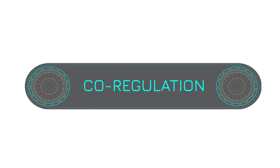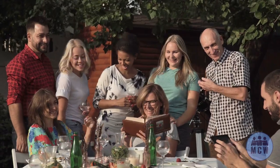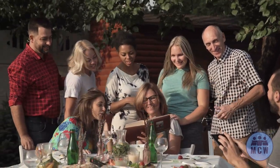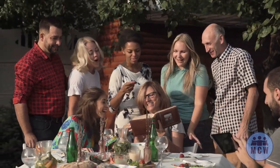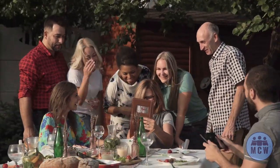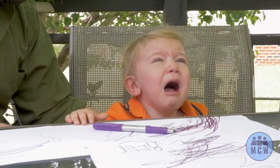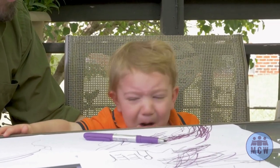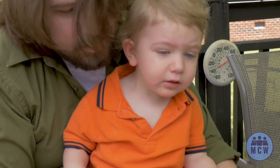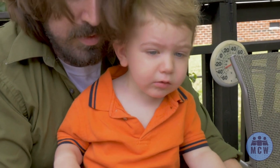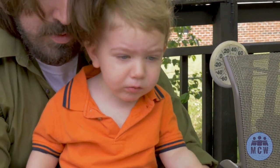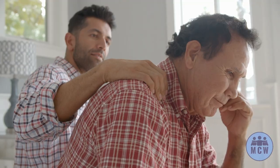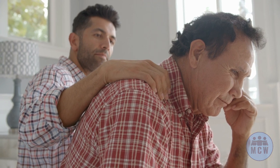Co-regulation: mammals are social, and that includes us. Humans need safe mammals to provide co-regulation. Think of a toddler throwing a tantrum — they are dysregulated. They need a safe adult to be there in their social engagement system to provide cues of safety. That is co-regulation. Adults need it too.